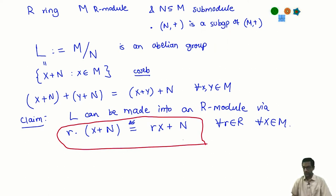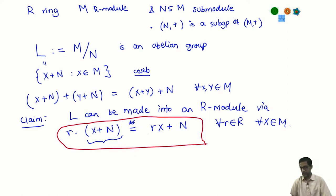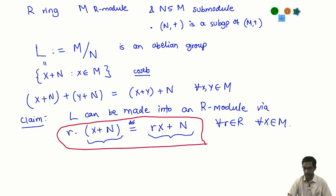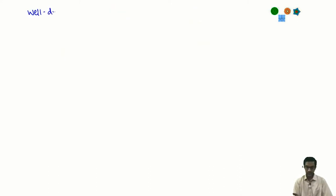What we need to do before proceeding further is show that this definition is actually well-defined. Why do we need to worry about well-definedness? Because the coset X+N has one particular representative X chosen, but I could have chosen a different representative. When I do that, I should ensure that the coset on the right-hand side remains the same — it should not depend on the representative chosen. Let us check that this definition is well-defined.